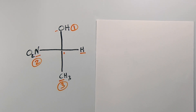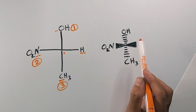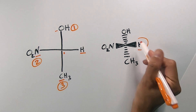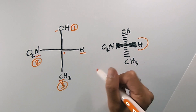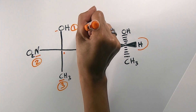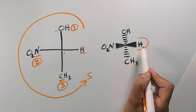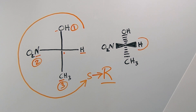Before determining RS configuration, remember the key rule: if your fourth priority is in a horizontal position, it is wedged and coming out of the page, which is not proper orientation. No worries — just rotate from one to two to three as before. You get a counterclockwise rotation, which indicates S, but because the fourth priority is in a horizontal position, simply flip your answer to the opposite: this molecule is R configuration.